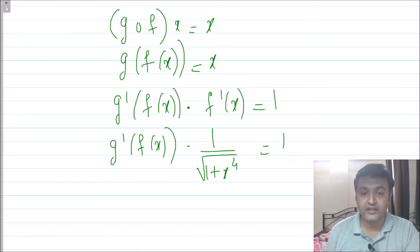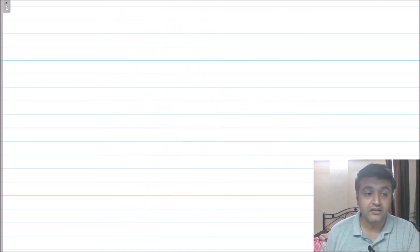Now what I want to find is g dash of 0. From here I think you should get the answer, but let me complete. This is equal to root of 1 plus x raised to 4. Now I want this to be 0, so what x should I take so that my f of x will be 0?